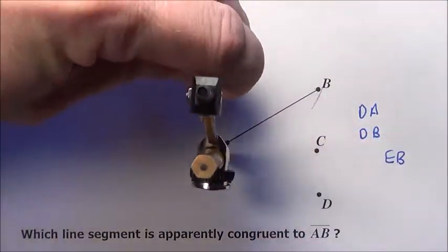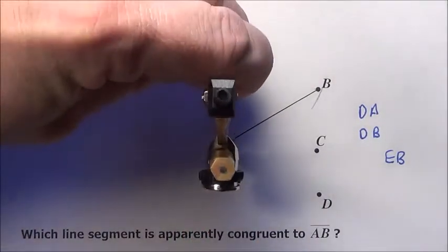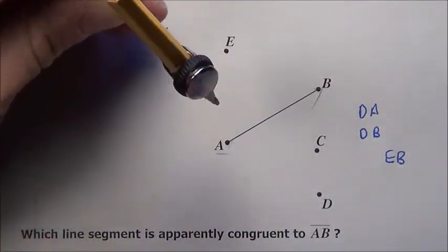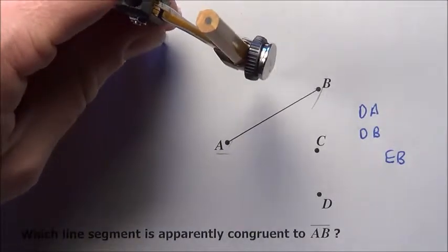And E to A, no, you can see that's way far off. It doesn't quite reach that A. What about F to one of them? F is a little short to both.